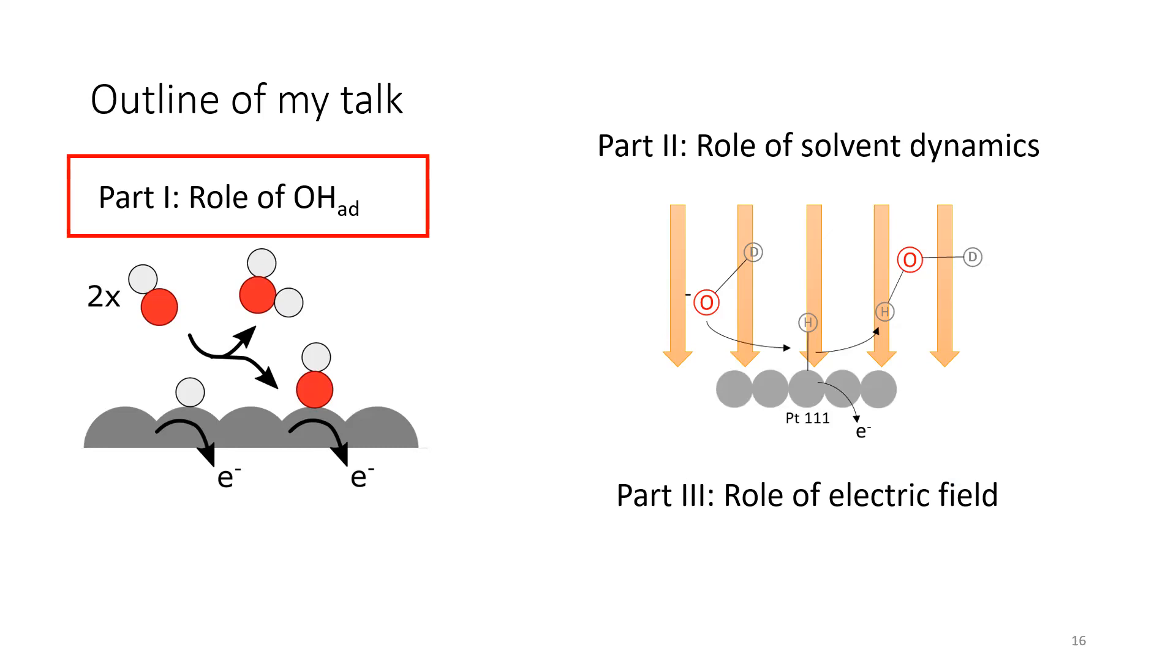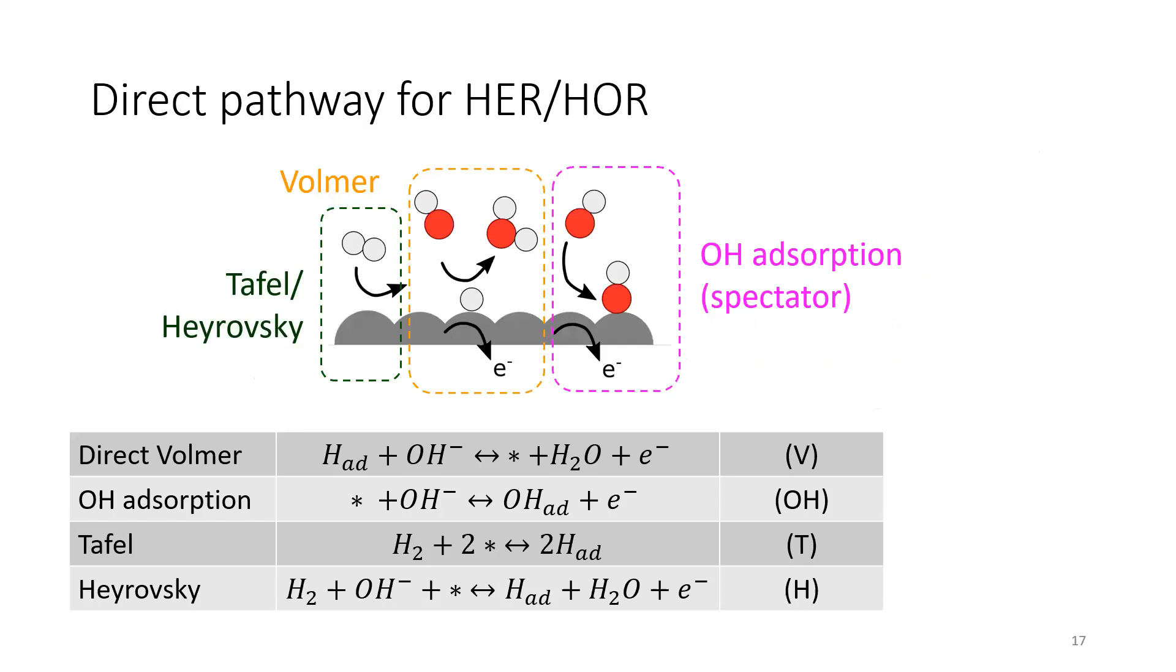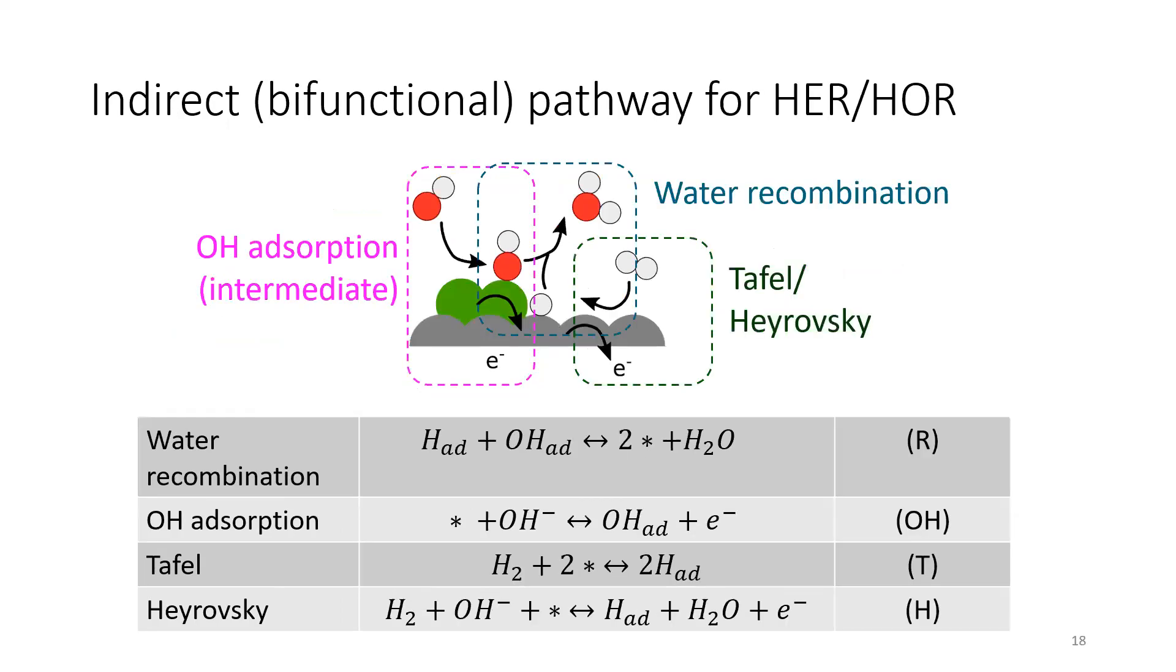In order to understand what hydroxide is doing, we're going to do some very classical experiments on electroanalysis, and we're going to combine it with some microkinetic models. I showed you before some of these hypothesized mechanisms. I'm writing them all down here. We have a direct pathway where OH is a spectator. It's adsorbed, but it's not doing anything. And we have an indirect, which is also called the bifunctional pathway, where OH is an active intermediate, and water recombination can be a slow step. This is a lot of steps. Let's narrow it down.